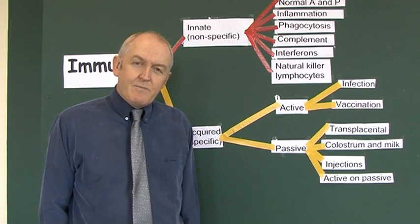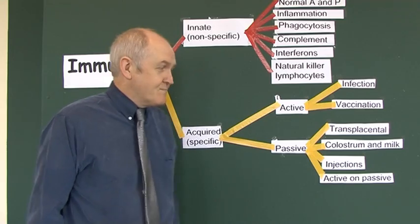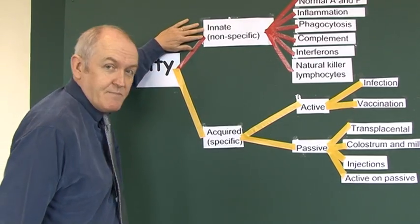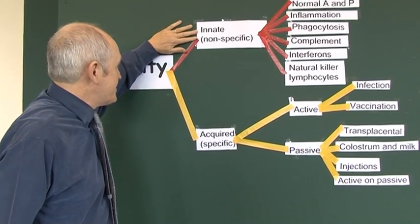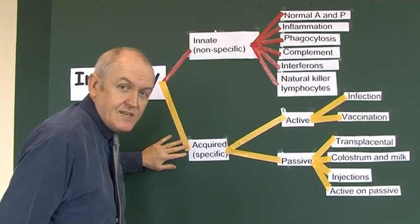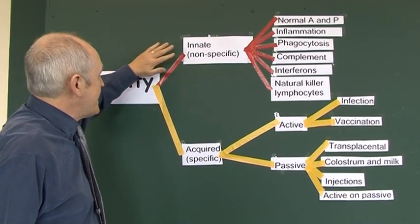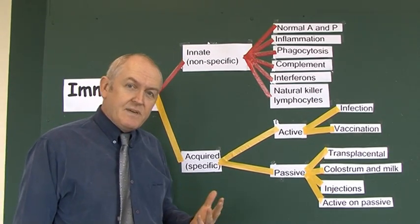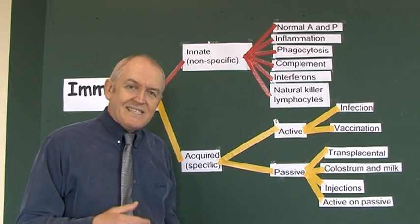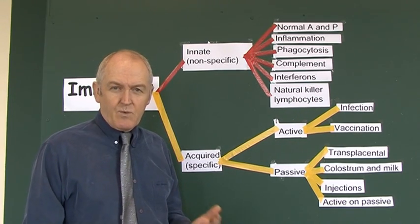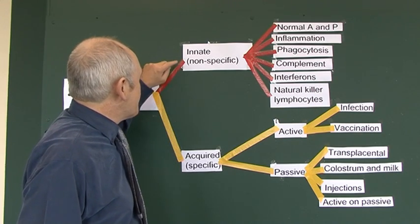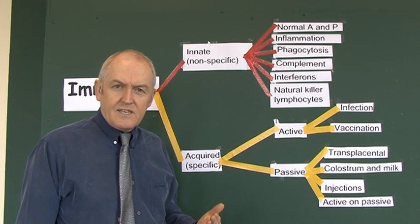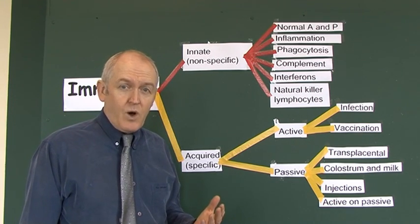Classically, immunity has been divided into two types: innate immunity, which is non-specific, and acquired immunity, which is specific. Innate means that this is inborn — we possess it as a result of the physiology we're all equipped with. And it's non-specific, meaning it acts against a wide variety of potentially infecting organisms.